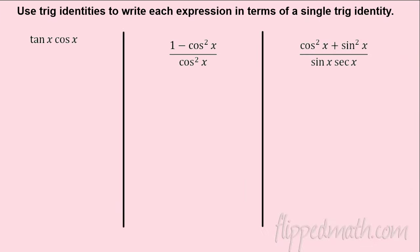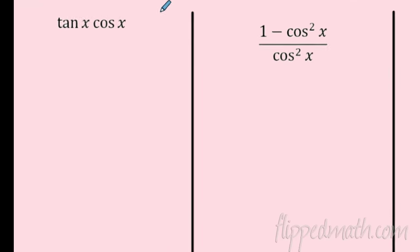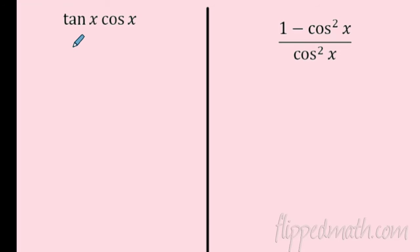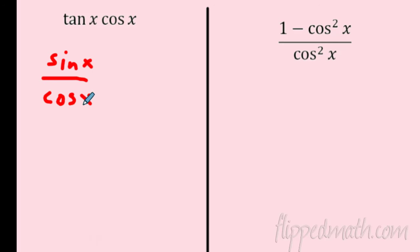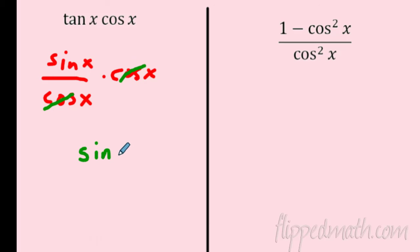Now let's use these identities to rewrite expressions into a single trig function. For example, simplify tangent times cosine. Rewrite tangent as sine over cosine, then multiply by cosine. The cosines cancel and we're left with just sine.